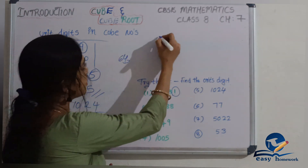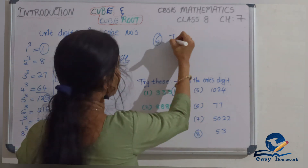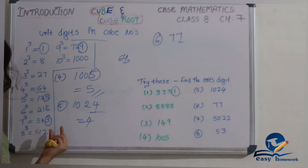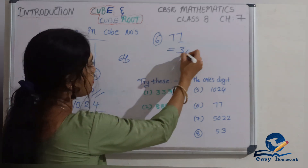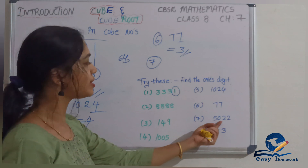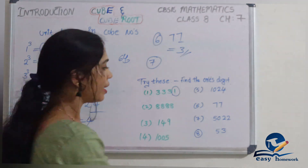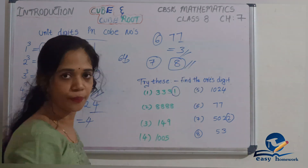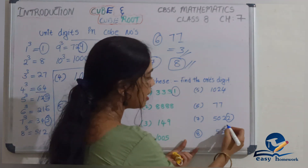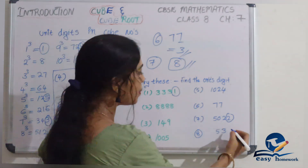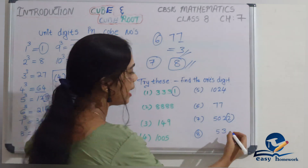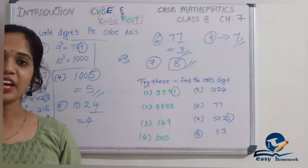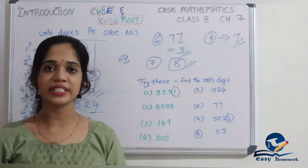Next: 44 — unit digit is 4. 4³ = 64, so unit digit is 4. Next: 77 — unit digit is 7. 7³ = 343, so unit digit is 3. Next: 5022 — unit digit is 2. 2³ = 8, so unit digit is 8. Next: 53 — unit digit is 3. 3³ = 27, so unit digit is 7. For any doubts, comment below or send a personal mail.